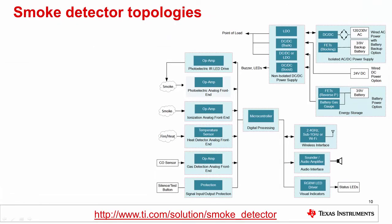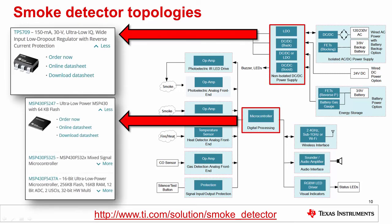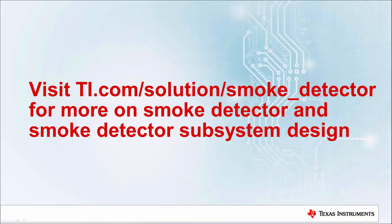An important tool that can aid in device selection for smoke detector designs is the end equipment reference diagram located at the link shown below. TI offers a wide selection of LDOs such as the TPS709 and digital processing components like the MSP430F5247. Adding in the trans-impedance amplifier selections previously mentioned, a complete low-cost design solution can be developed. For more information on the smoke and heat detector system, visit the EERD link below.